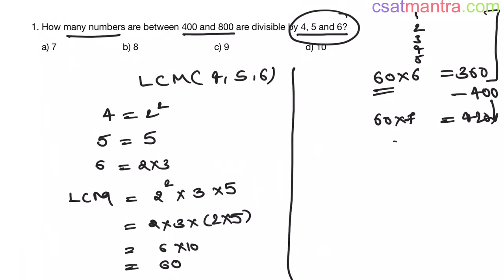Now, 60 times 13: 60 times 10 is 600, 60 times 3 is 180, so 780. If you add one more 60, this will become 840, which is above 800, so we do not need that.